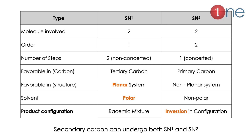In SN1, the rate-determining step involves only one molecule; in SN2, two molecules are involved. SN1 has two steps; SN2 is one concerted step. Favorable carbocation for SN1 is tertiary; for SN2 it is primary. SN1 favors a planar structure; SN2 favors a non-planar system. SN1 uses polar solvent to stabilize the cation; SN2 uses non-polar solvent. SN1 product is a racemic mixture; SN2 gives inversion of configuration. Secondary carbon can undergo both SN1 and SN2.